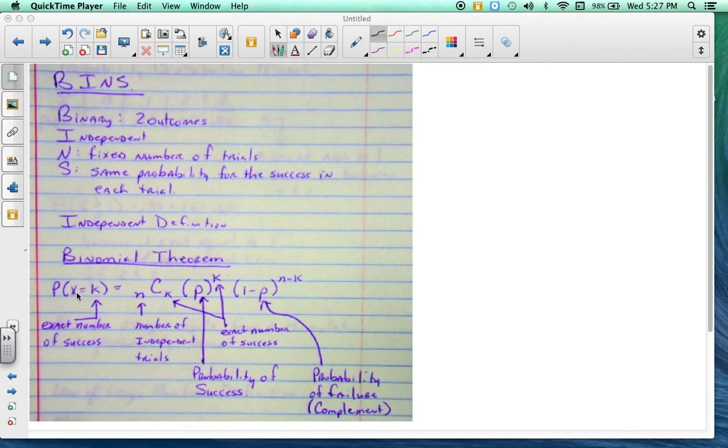Binomial theorem, the probability that x equals k, that's k is the exact number of successes, so n choose k, the number of independent trials, and we're going to choose the exact number of successes. P right here is the probability of success.